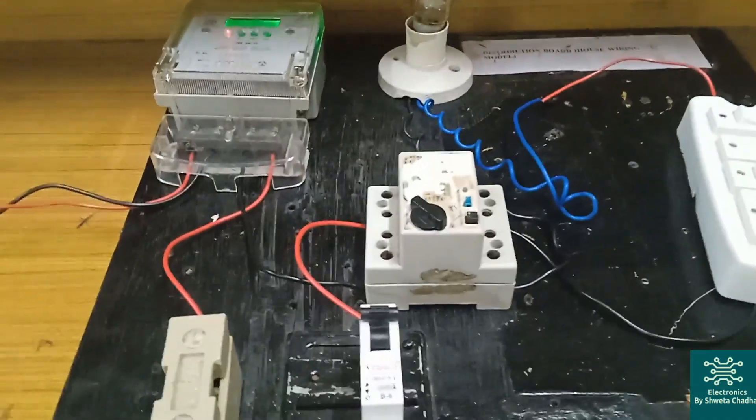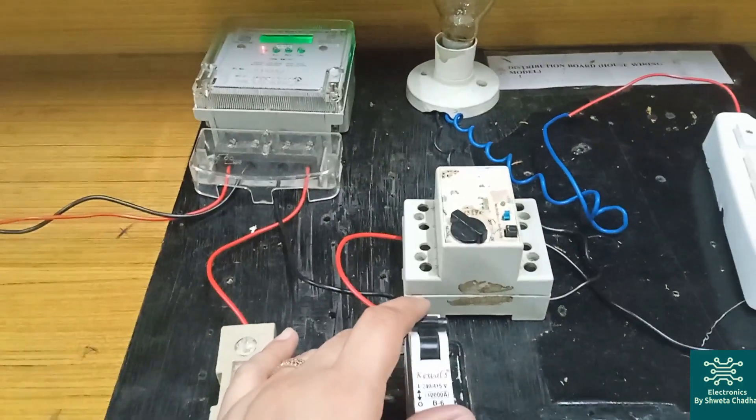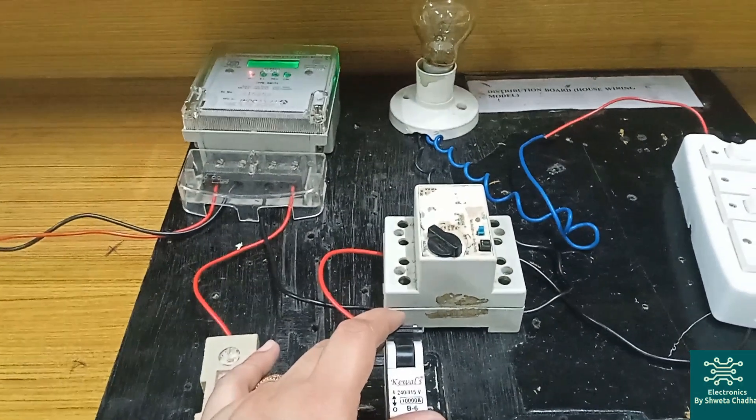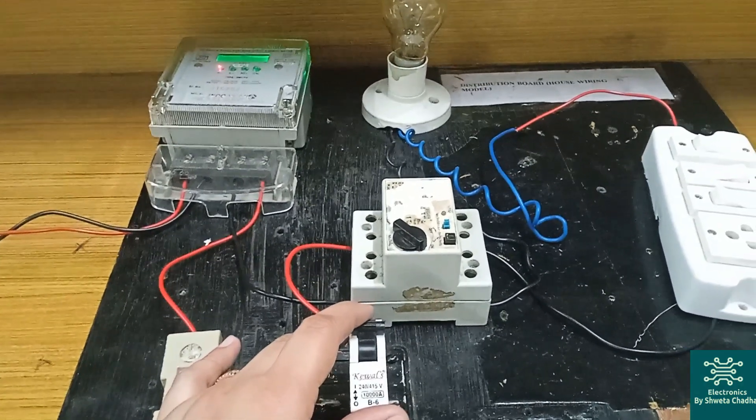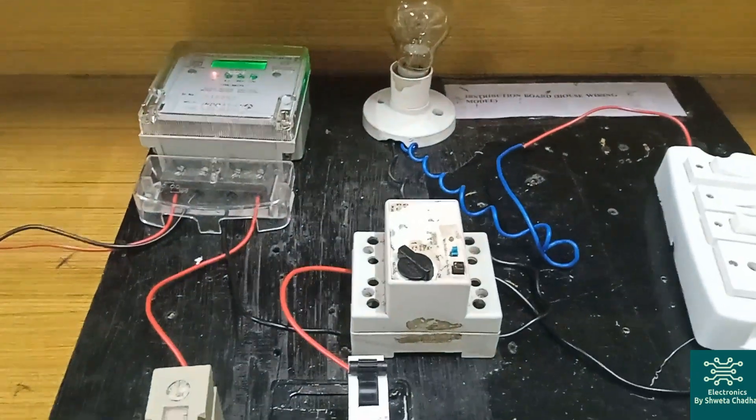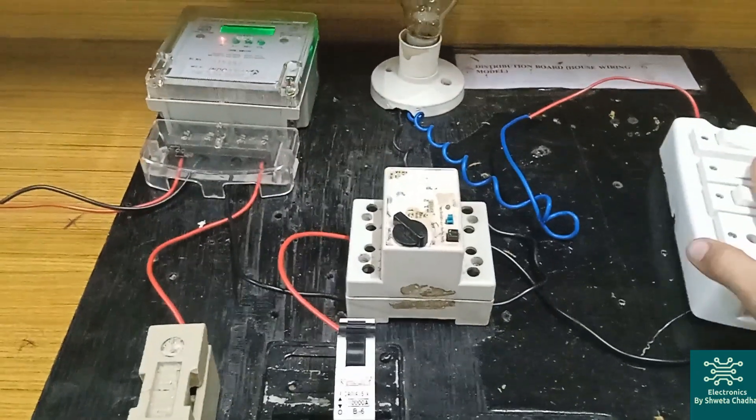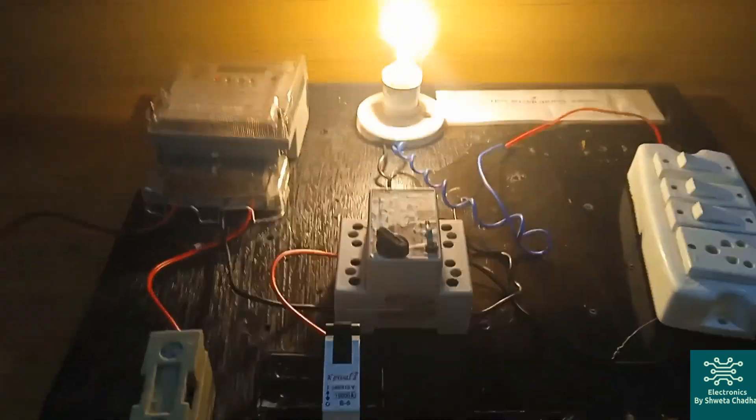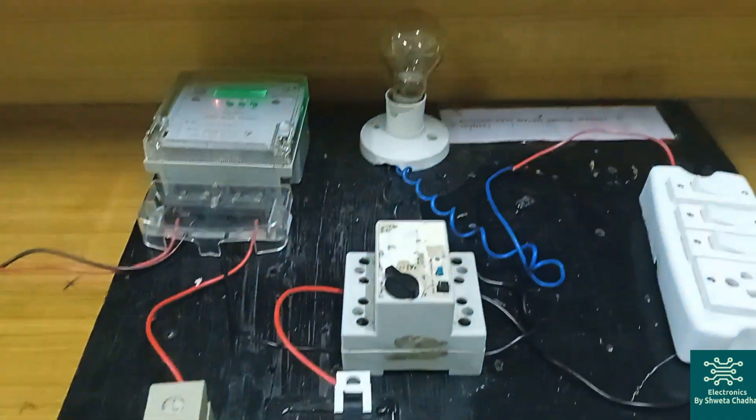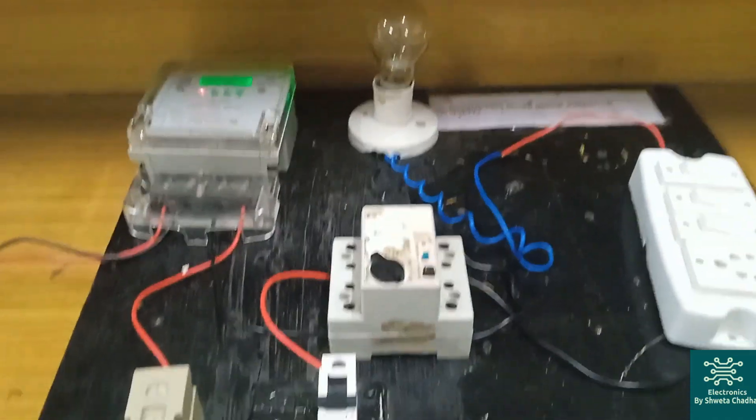So now what is the function of MCB? Although we are unable to increase the current over here, let us do it by ourselves. When a high amount of current starts flowing in our circuit, this MCB will trip down like this. So you can have a look, open circuit.